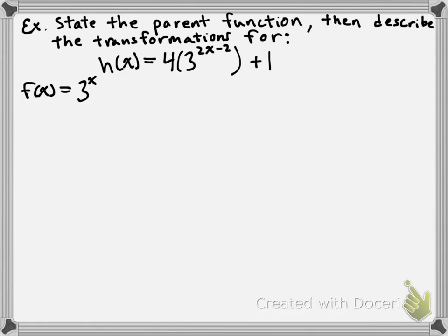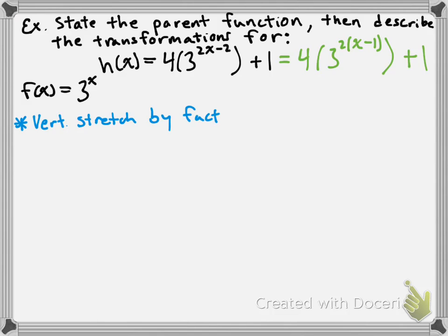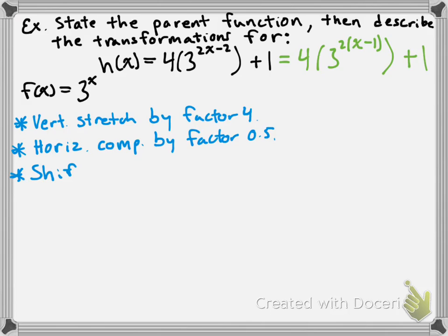What I'm hoping you notice is that you actually have to rewrite the function because the k value has not been common factored. So I'm going to start by common factoring the k value — that gives us 4 times 3 to the power of 2 times x minus 1, plus 1. Now we can describe the transformations: an a value of 4 gives a vertical stretch by a factor of 4; a k value of 2 gives a horizontal compression by a factor of one-half; a d value of 1 gives a shift one unit to the right; and a c value of 1 gives a shift up one unit.